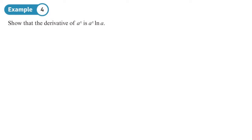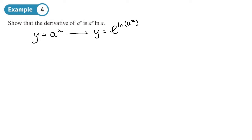This is something they could ask you to reproduce in the exam. The first step is to let y equal a to the x. Then we write this as an equivalent expression by writing e to the log of a to the x — it's the same thing, because the e and log cancel to give you back a to the x. We write it this way for a particular reason to allow us to do this proof.